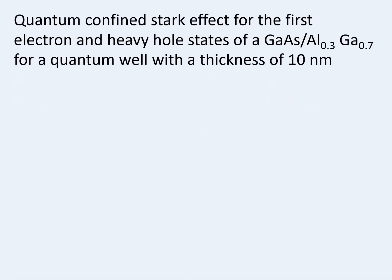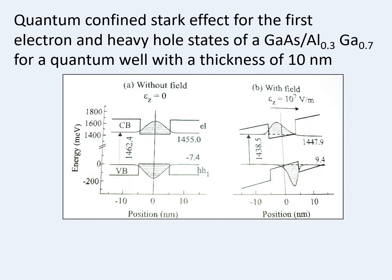I am considering a semiconductor GaAs, or in place of As, I can take two materials — aluminium and gallium with a ratio of 30% and 70%. In this system, a quantum well of thickness around 10 nanometres is considered, in which we are studying quantum confined Stark effect — meaning we are applying an electric field and observing what happens. You can see in the picture, one part is without field and the other is with field. When applying field, the range is 10 to the power 7 volts per metre. Both graphs are drawn between position and energy — position in nanometres and energy in millielectron volts.